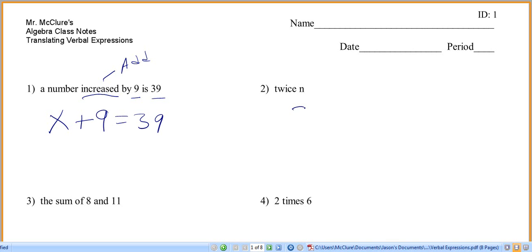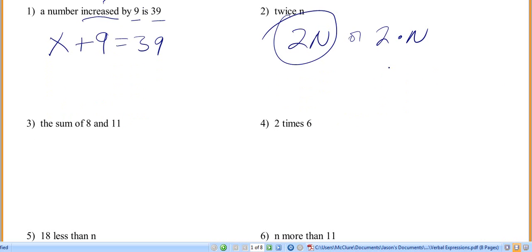So you've got twice n. It would be 2n, right? Or if you want, you could do 2 times n. Either way, it's kind of what I look for in class. But I count that answer.